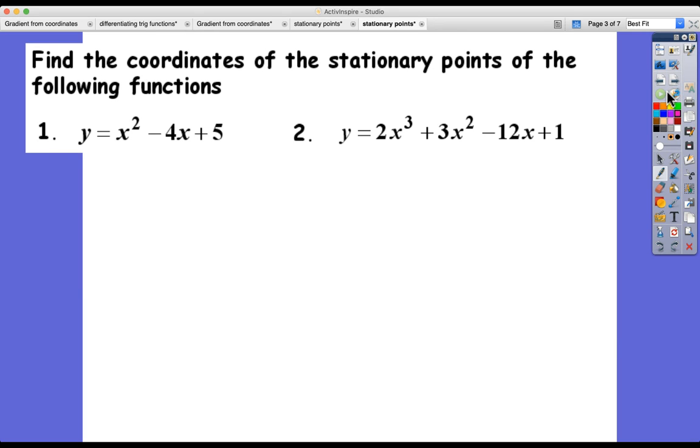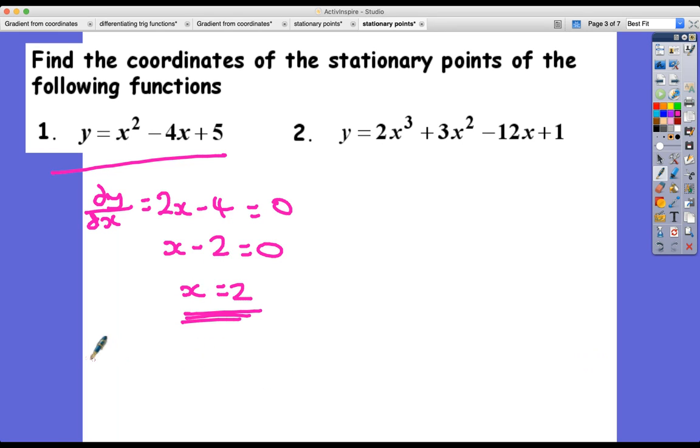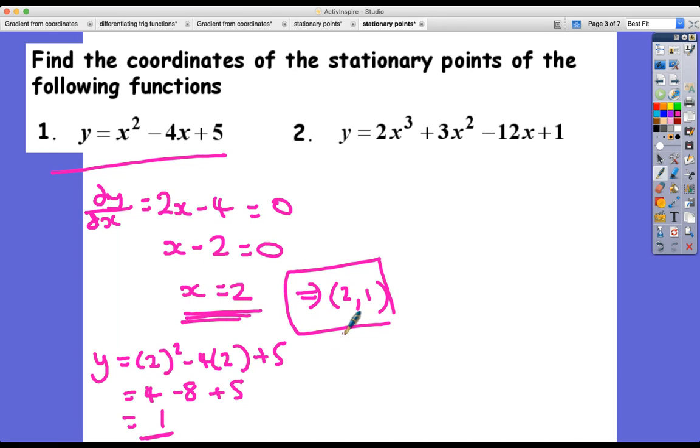Find the coordinates of the stationary points of the following functions. Let's skip ahead. y = x² - 4x + 5. First of all, step one: we're going to find what dy/dx is. It's 2x - 4, and we're going to set it equal to 0. I'm going to take that nice trick which is to look for any common factors, and the common factor here is 2. So it's x - 2 = 0. That tells me that the x coordinate of my stationary point is 2. And how would I find my y coordinate? I'd put it back into the original function. So y = 2² - 4 × 2 + 5, which in this case is 4 - 8 + 5, which is equal to 1. So my coordinates of the stationary point here are (2, 1).